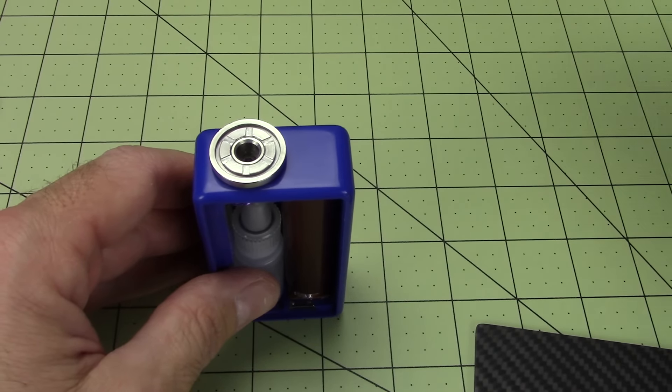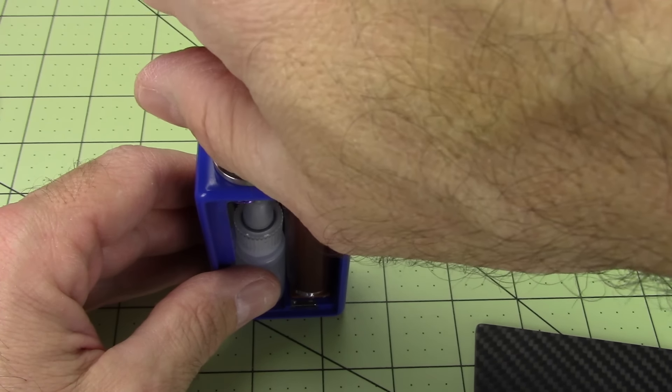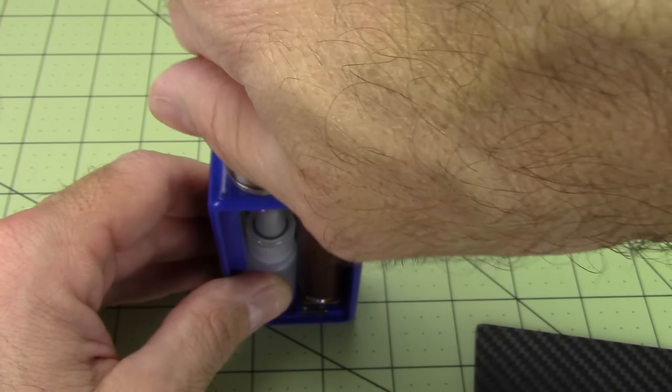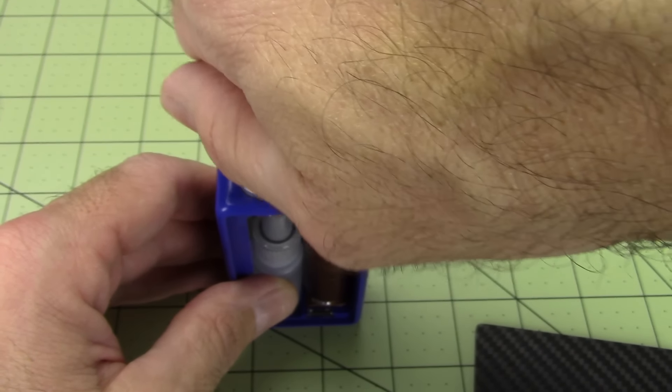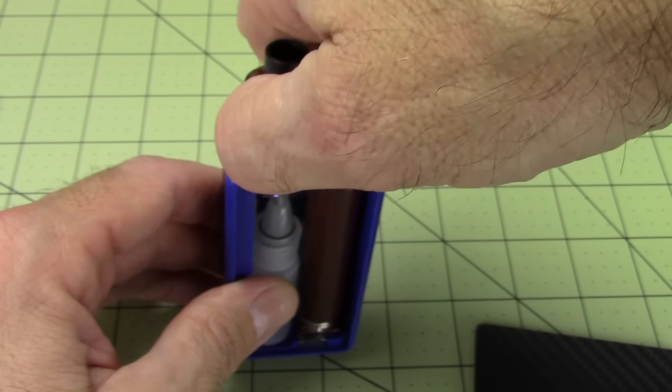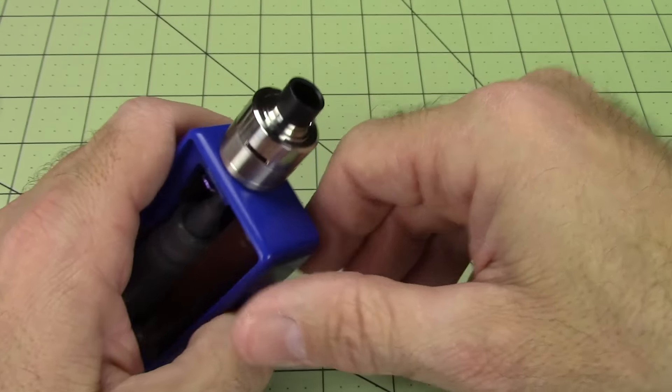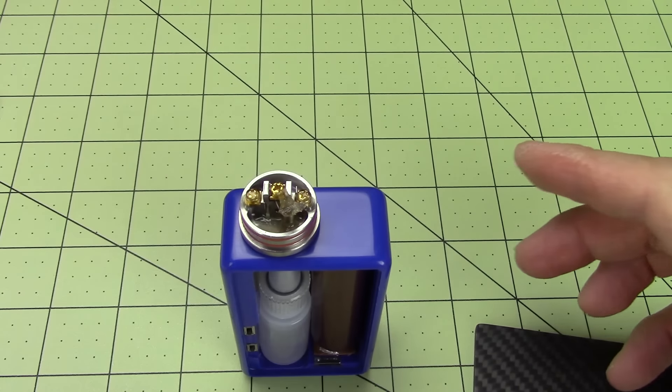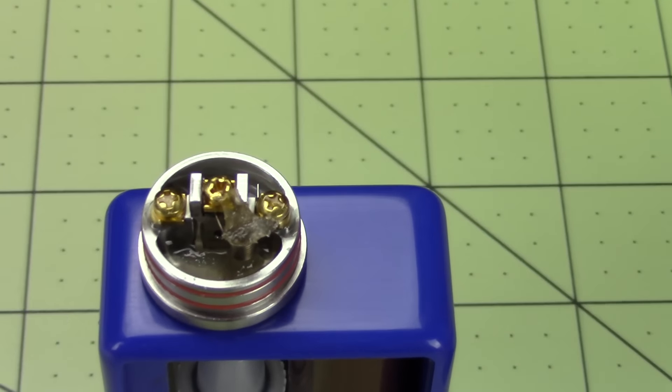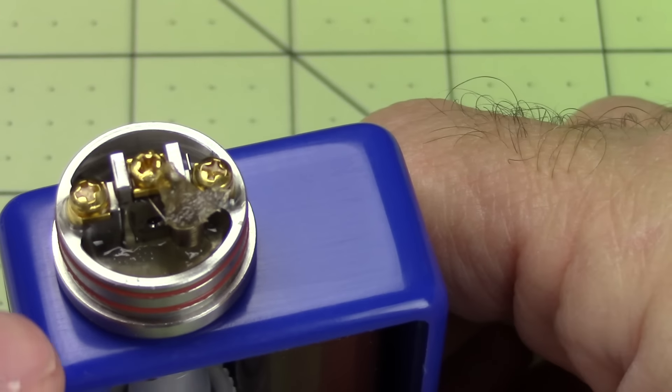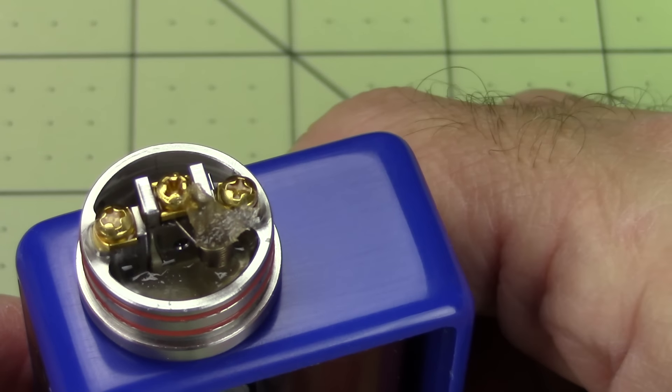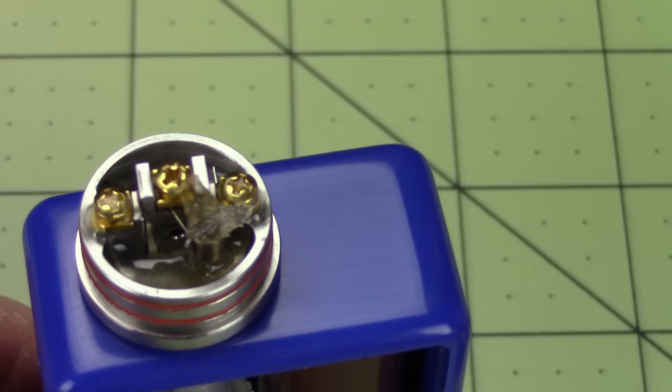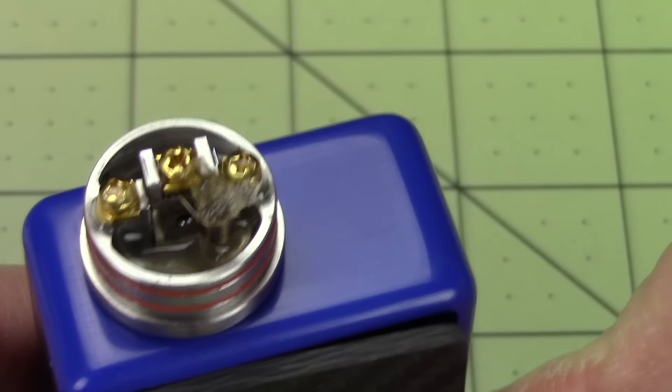Okay. Here's a mod with an atomizer on it. A 22 millimeter atomizer. In there. Simple single coil. And I'll take you through the hole. Squonking. How it goes down. Pay close attention to that hole right there you'll see when I press this bottle juice just comes up into your atomizer, wets your wick, squonking is carried out.